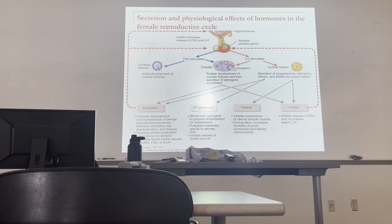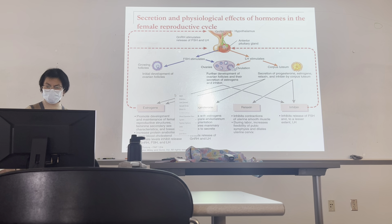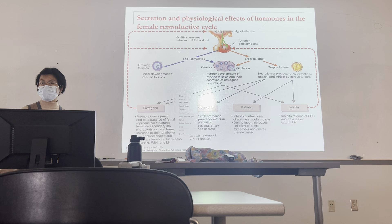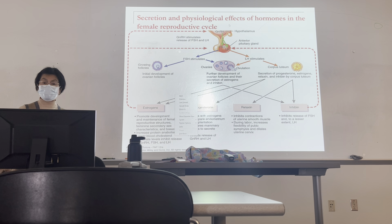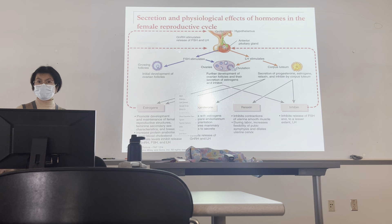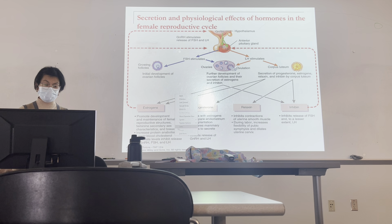Towards term, the placenta will start secreting relaxin to relax the cervix and open it up so delivery can be successful. Remember, it's the brain that controls and regulates everything, whether you're male or female. When asked which hormone starts everything, choose the brain — choose the hypothalamus, because it's the main regulator. It stimulates the anterior pituitary and the cycle repeats monthly. In males it's not monthly — it's continuous, just negative feedback, but still cyclical.